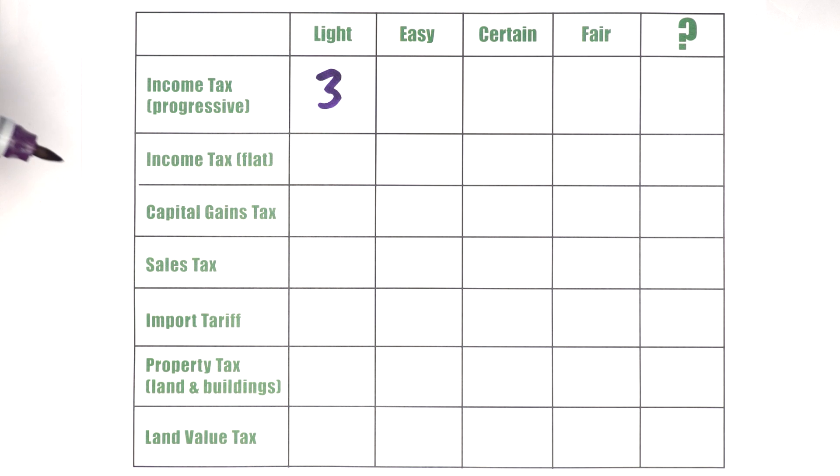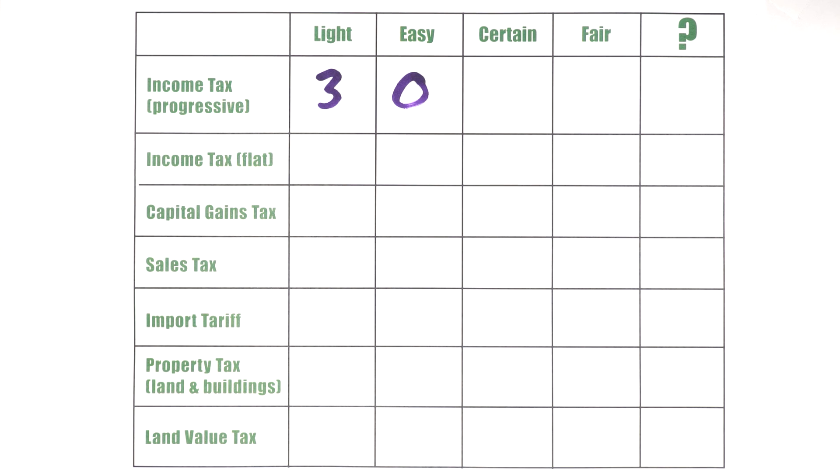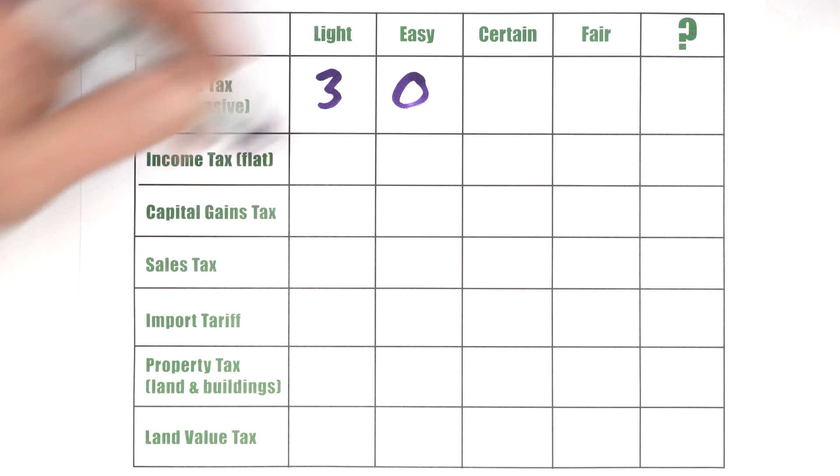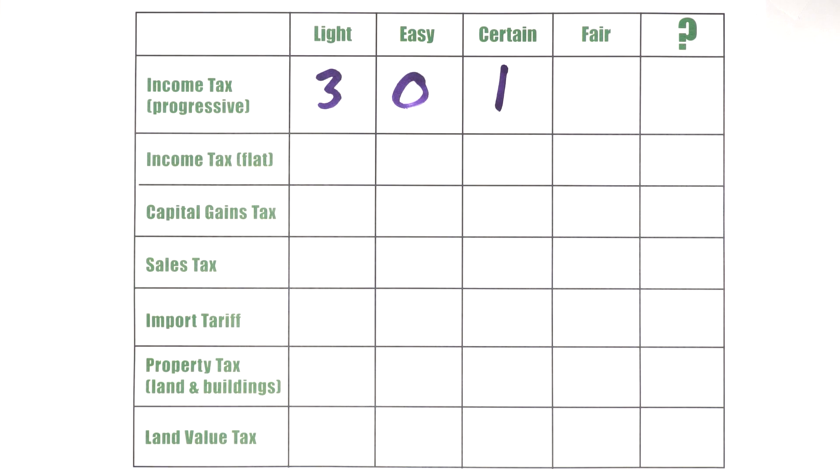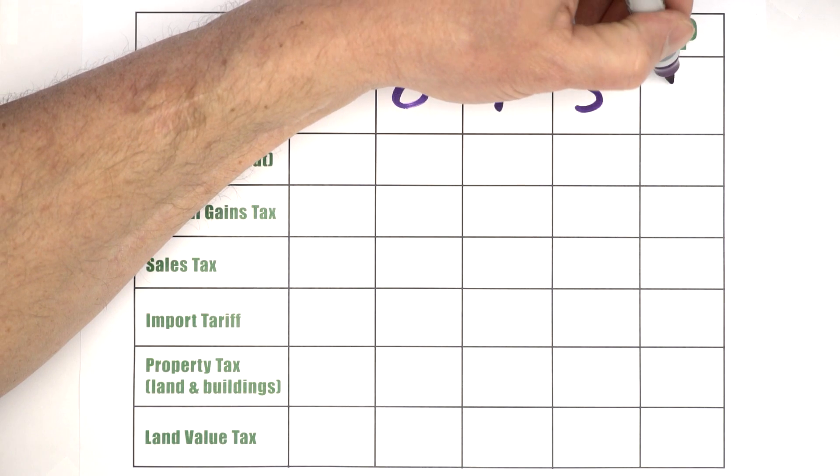Is it easy and cheap to collect? Oh my gosh, no. Remember the U.S. tax code has 73,000 pages? Definitely fails on that score. Is it certain? Well, no. As we've discussed, the economy has all this volatility and you never know from year to year how much income there's going to be. So it's really, it's somewhat predictable but not real certain. Is it fair? Well, it does have some elements of fairness because it tries to take more income from people who can afford it more and richer people might have more unearned income. So we'll give it a three on fairness for a grand total of seven.